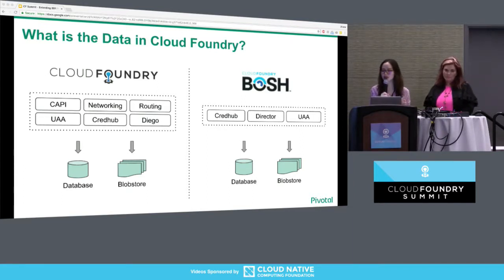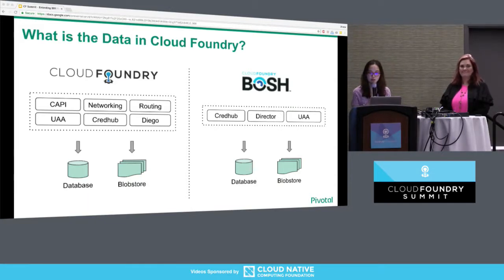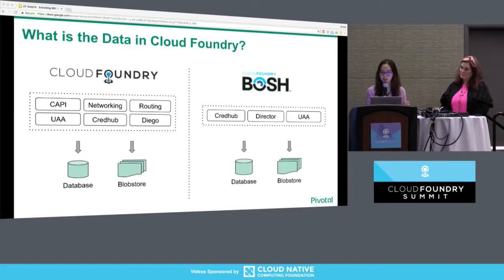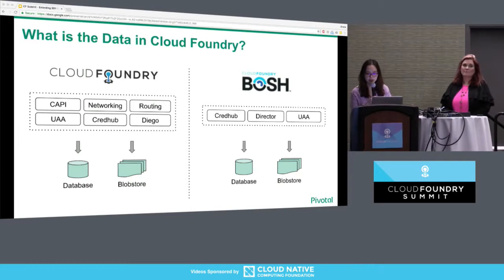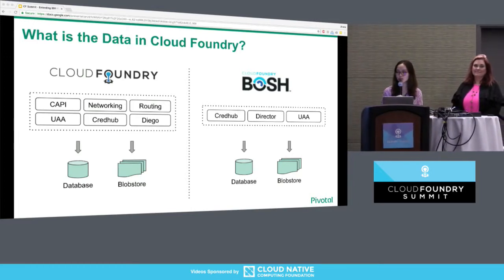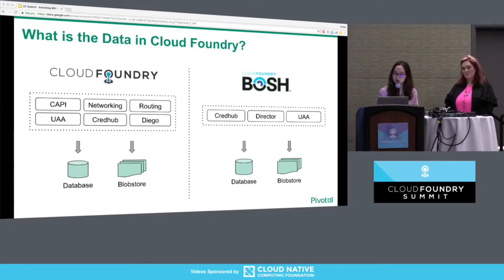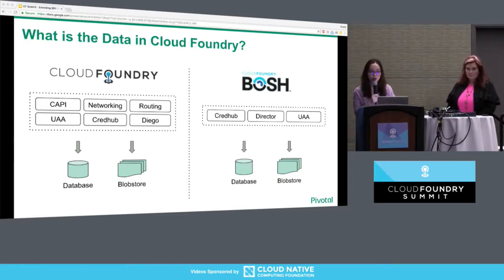Let's talk about what data is in Cloud Foundry and what it means to back up a CF deployment and BOSH directors. In Cloud Foundry, individual components like the Cloud Controller or the UAA store data in the database — it can be internal MySQL or an external database that the operator has configured. We also have staged applications, what we call droplets, which are stored in the blob store. Similarly, in BOSH, the director stores its state in the database and compiles releases and packages in its blob store.